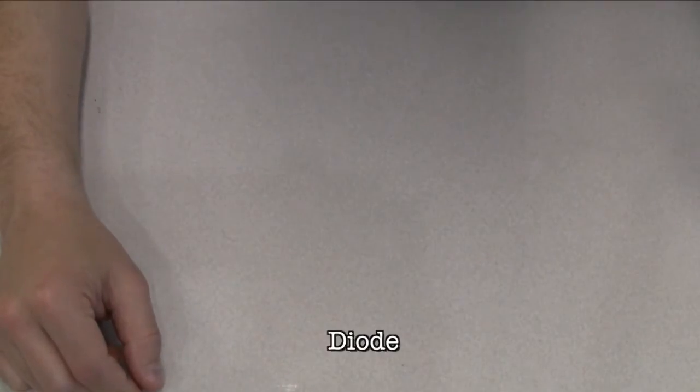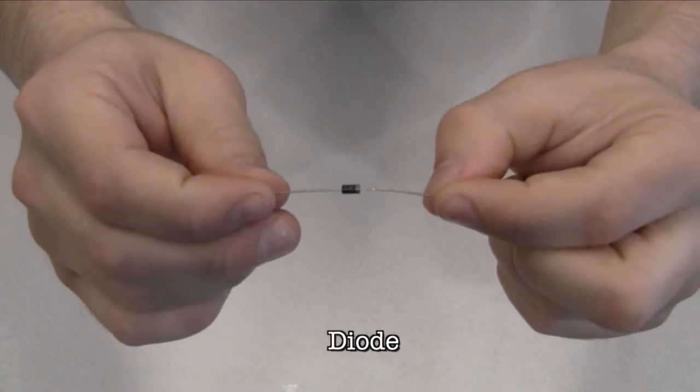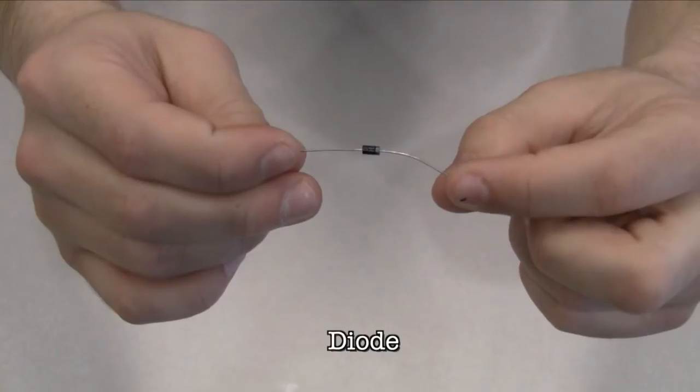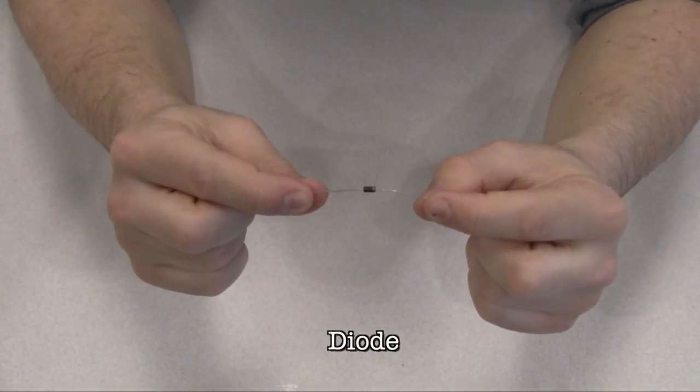A diode ensures electricity only flows in one direction. This is useful when you have a motor or other high current slash voltage load in your circuit. Diodes are polarized, meaning that the direction that they're placed in a circuit matters. Placed one way, they allow current to pass through. Placed the other way, they block it.